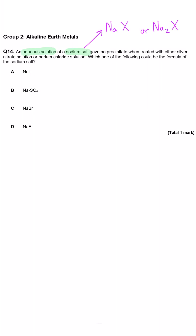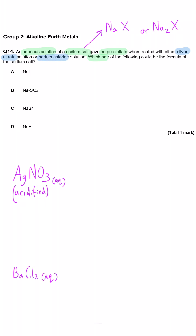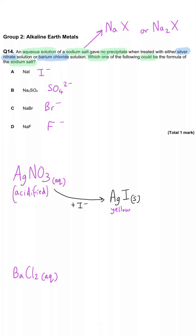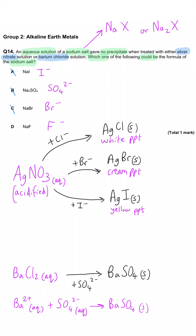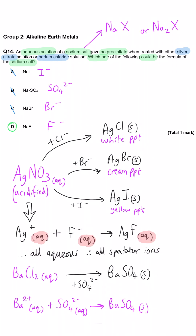An aqueous solution of a sodium salt gave no precipitate when treated with either silver nitrate or barium chloride. Which could be the formula of the sodium salt? We can ignore the sodium and compare the negative ions. A, iodide — silver nitrate gives a yellow precipitate. B, sulphate — reacts with barium to give a white precipitate. C, bromide — gives a cream precipitate with silver nitrate. So D, sodium fluoride, is the correct answer: silver fluoride is totally soluble and no precipitate forms.